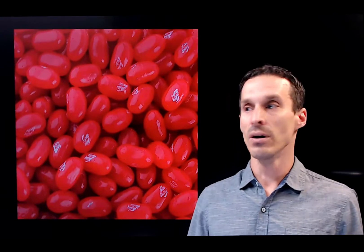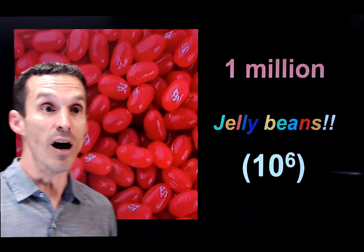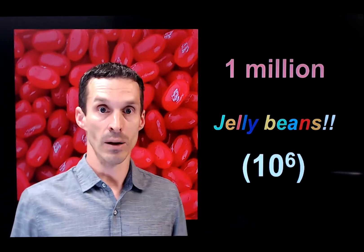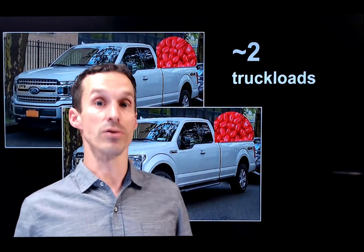So we're talking parts per million and a family of related units that work in a similar way. I thought about different ways to convey what a part per million is. Let's just put chemistry aside for a second and talk about a whole bunch of jelly beans. Let's say I have a million of them. Now, how much is a million jelly beans? Well, just imagine about two truckloads full of jelly beans. This is quite a bit, right?